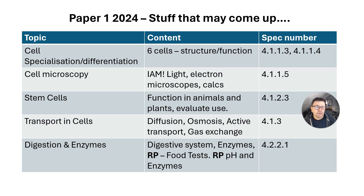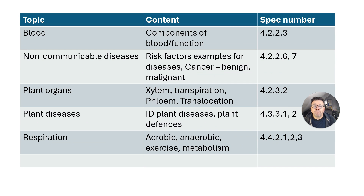You can find those required practicals on DrBiology — look at the playlist for required practicals on the website. There was nothing on blood at all. On non-communicable diseases, there was nothing on cancer, so learn those keywords: what is a benign tumour and what is a malignant tumour? Also think of some risk factors for different examples of diseases.